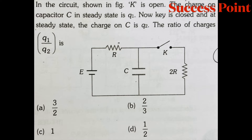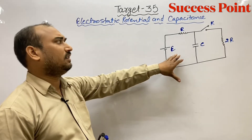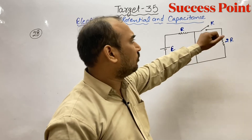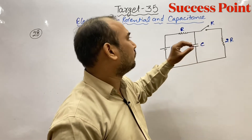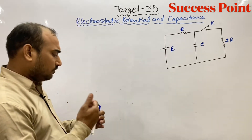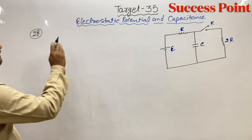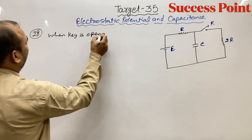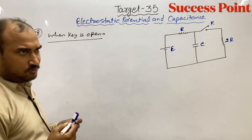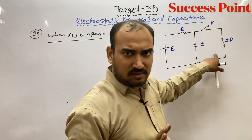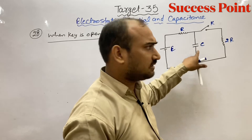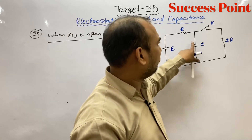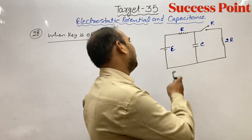तो बच्चों, हमको यह question दिया है। यहाँ पे एक EMF लगा हुआ है। पहले key open है, उस समय इस capacitor पे charge कितना जाता है — q1। जबकि close होगा तो charge q2 जाएगा। तो q1 और q2 का ratio find करना है। जब key open है, तो इधर current जानी नहीं है, और steady state में capacitor का resistance infinite हो जाता है, तो यहाँ से कोई current pass नहीं होगी।